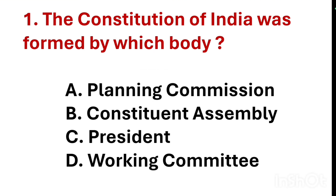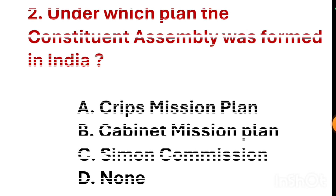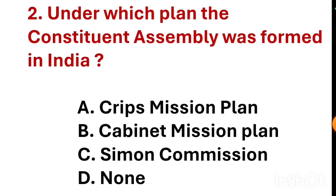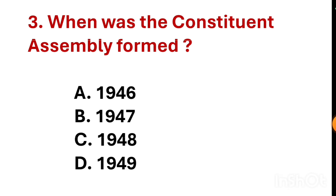The Constitution of India was formed by which body? The correct answer is option B — the Constituent Assembly. Under which plan was the Constituent Assembly formed in India? The correct answer is option B — the Cabinet Mission Plan.